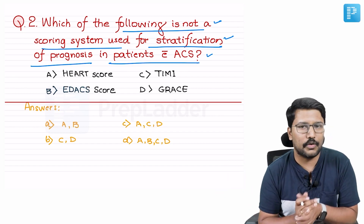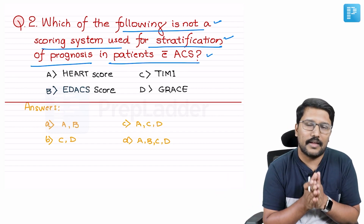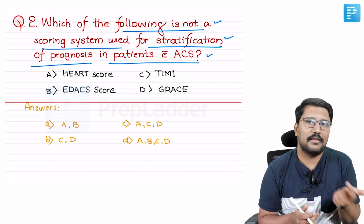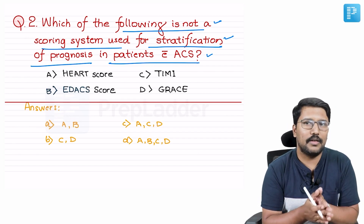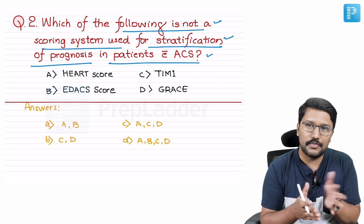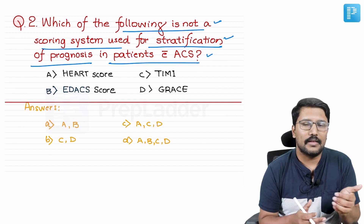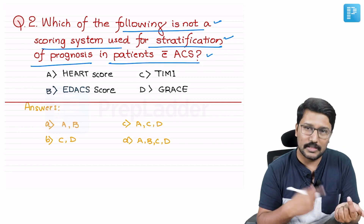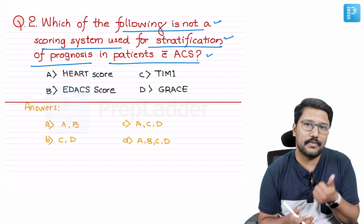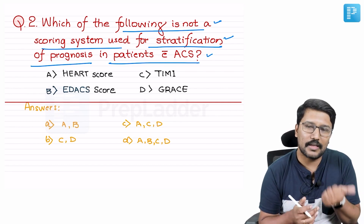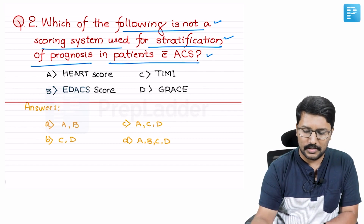Once you confirm that you are dealing with a case of acute coronary syndrome, for prognostication we have a separate set of scoring systems. Those scoring systems are particularly more useful when you talk about non-ST elevation acute coronary syndrome, because that can help you make a decision regarding the intervention — whether you need to follow an early or immediate invasive strategy or a conservative strategy. That decision can be facilitated by these prognostic scores.